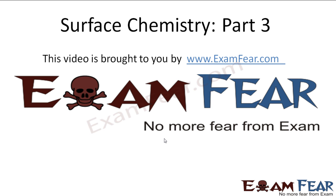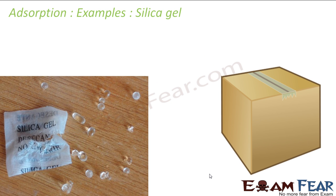This video on surface chemistry part 3 is brought to you by examfier.com. One good example of adsorption is silica gel. Silica gel comes in small spherical balls because it has a tendency to adsorb water molecules. Using the spherical ball form, it can adsorb more water molecules on its surface. Silica gel is generally used for packing, and air becomes dry in its presence.